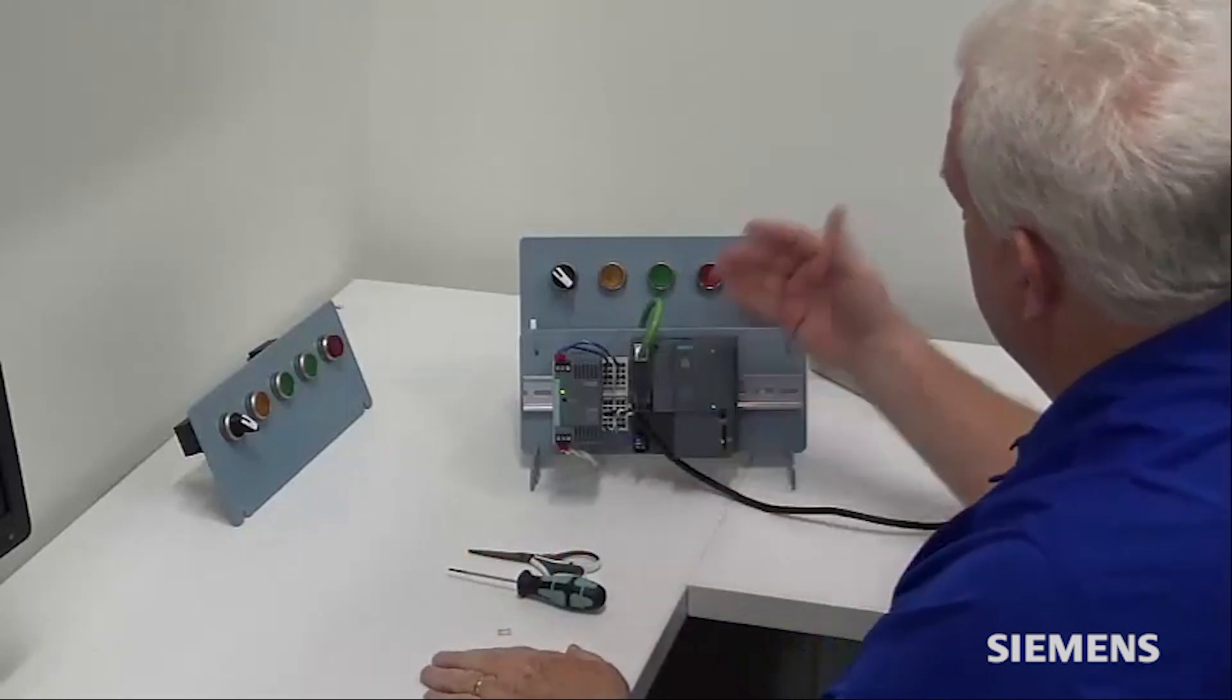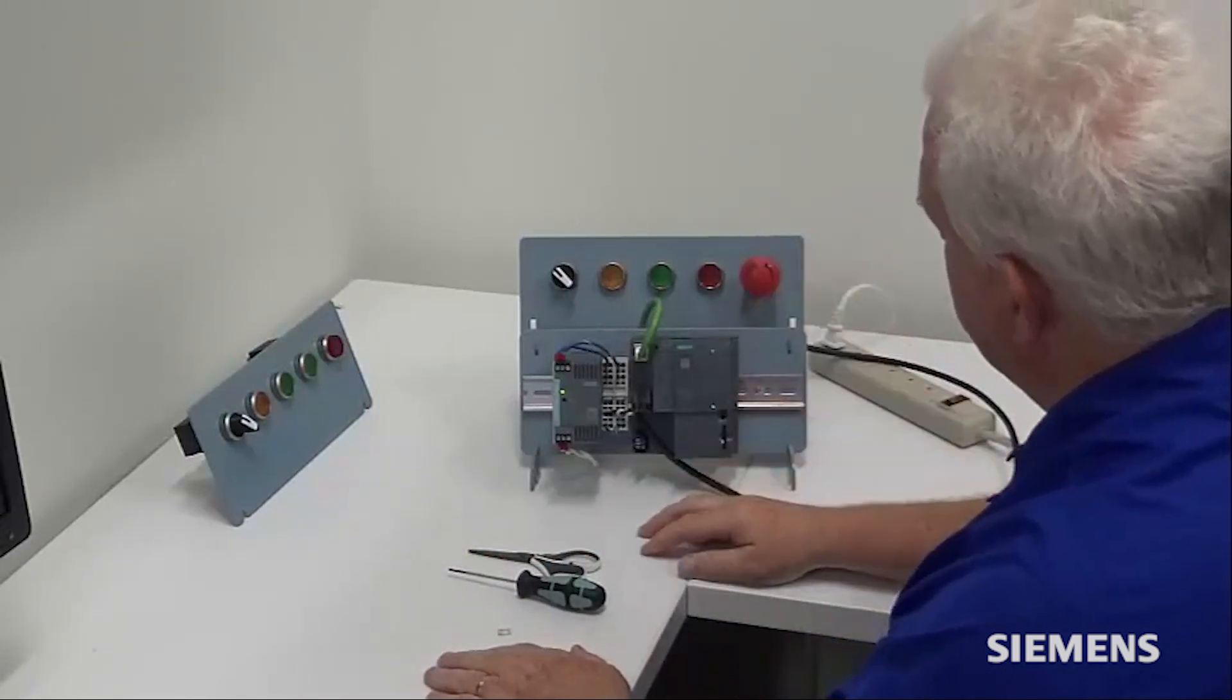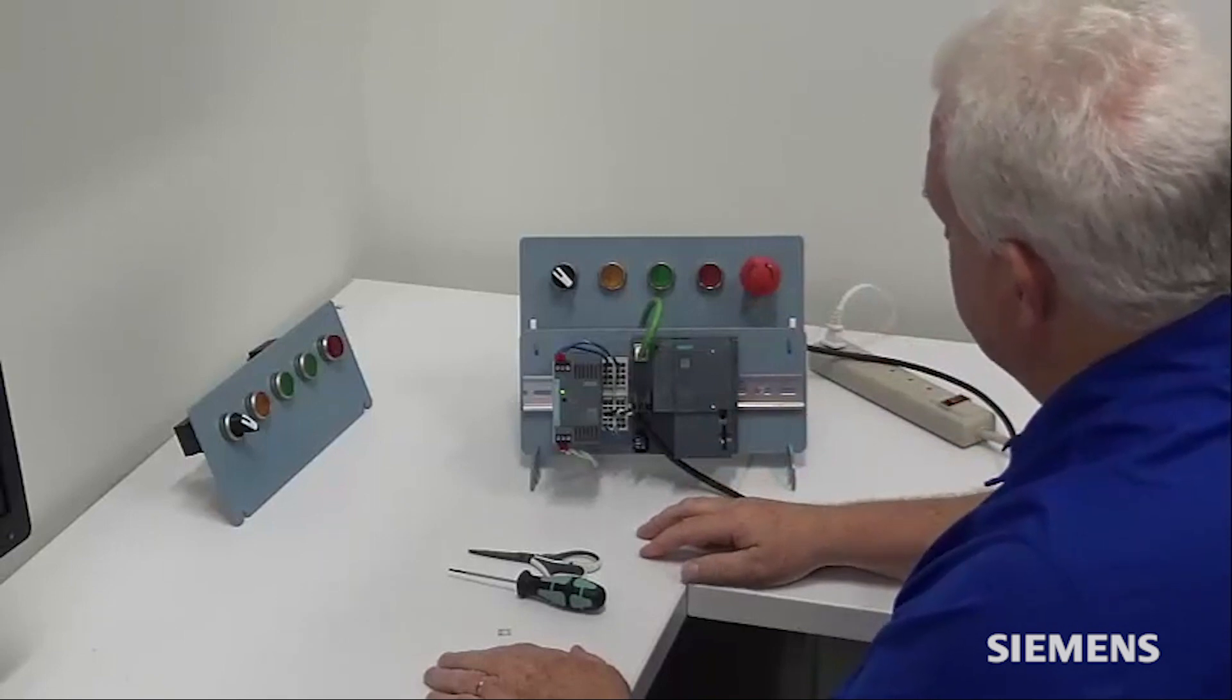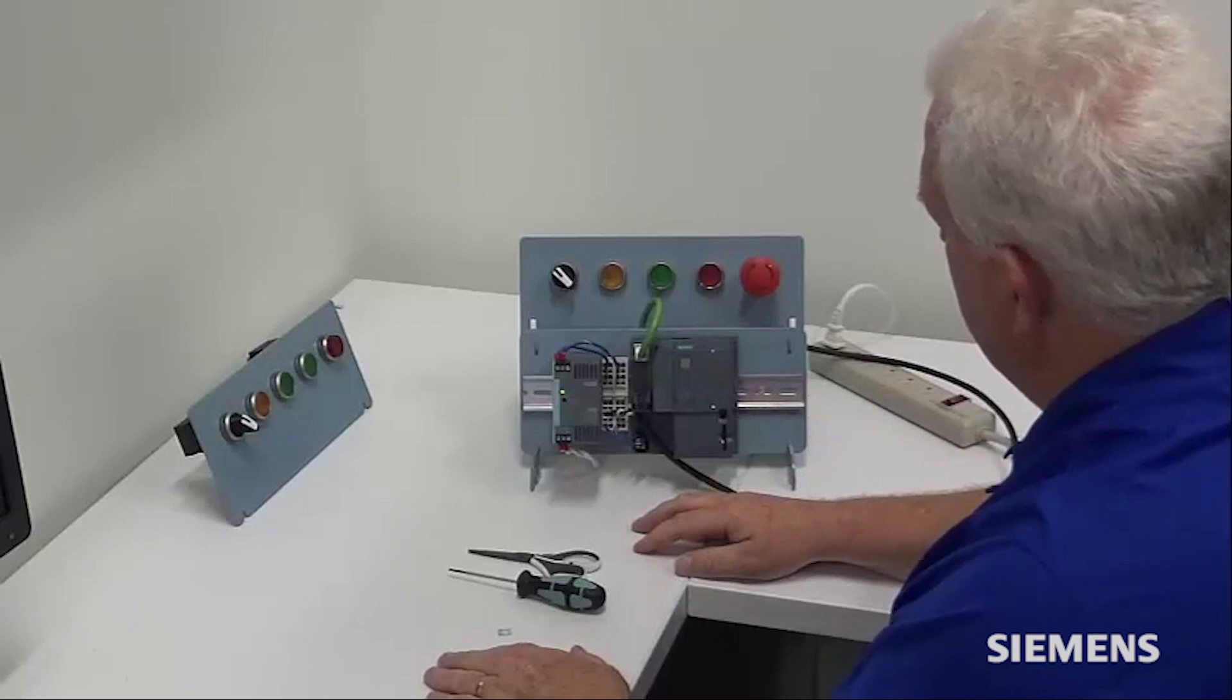The PLC will come back up, check its connectivity to the EEPROM, to the E-Stop system. Once it establishes that connection, it will go back into run mode. And the system will be back up and running with full operation.